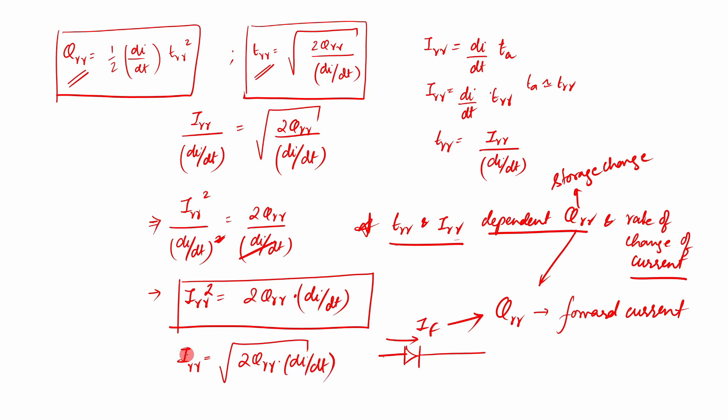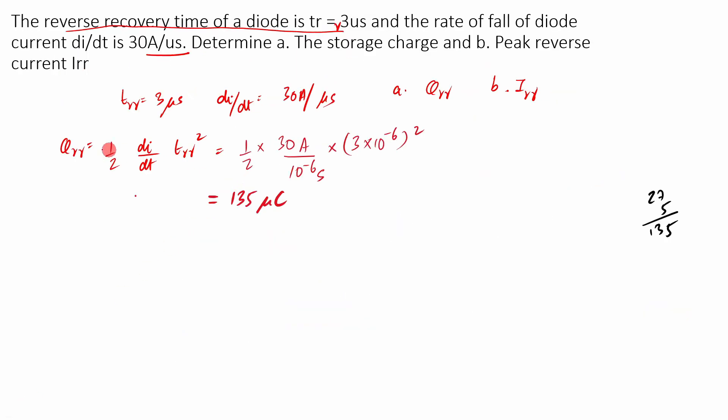So very sorry for this, but anyway it was not a major mistake. I am sure that most of you might have found that out also. Another thing was that in the numerical which we were discussing, I forgot to do the second part of the numerical. So we will do that also now. So we found out that the reverse recovery charge or the storage charge QRR was equal to 135 microcoulombs.